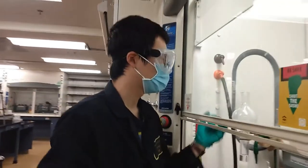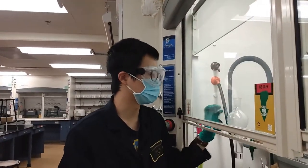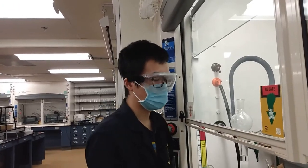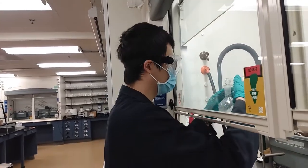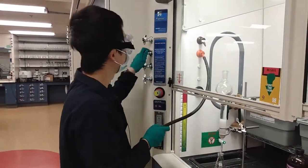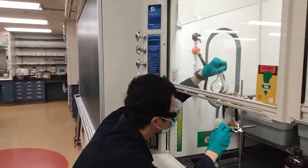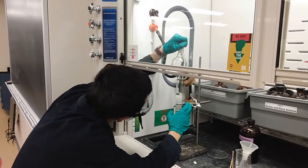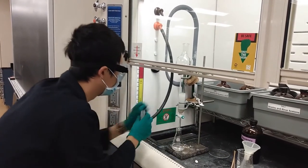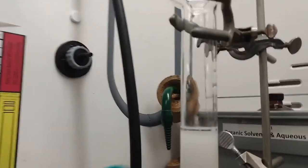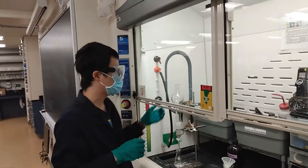We still have some silica gel attached to the side of this column, so we can use hexane to rinse it off. Usually we want a little bit more hexane above the silica gel just in case the silica gel will not dry out at the top. That's how we pack the column.